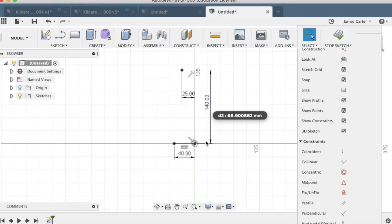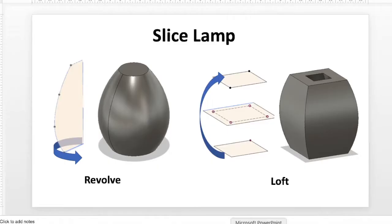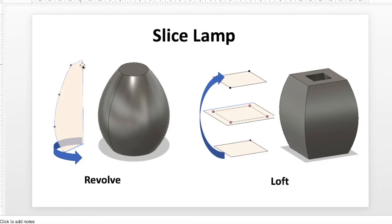I've got that basic shape — you can see it says 40 millimeters there. Going back to our PowerPoint, that's the 40 millimeters, because this spins in a circle. When it's finished, that base at the bottom of the lamp will be 80 millimeters wide. And the top line I set to 25 millimeters — when I revolve that all the way around, it will be 50 millimeters across in diameter.